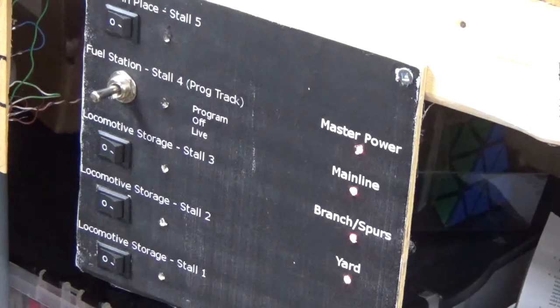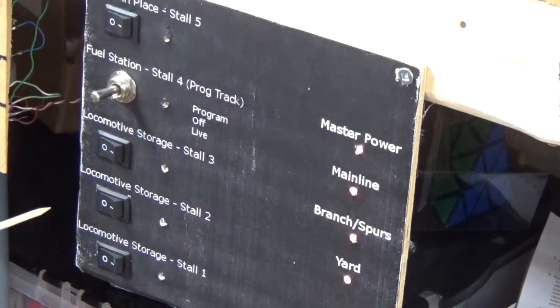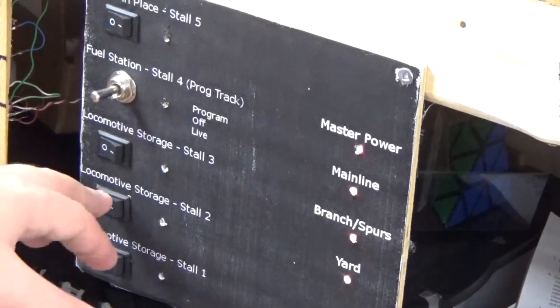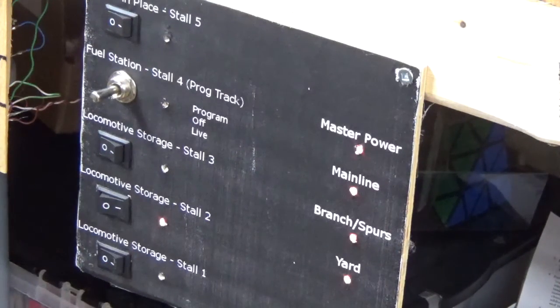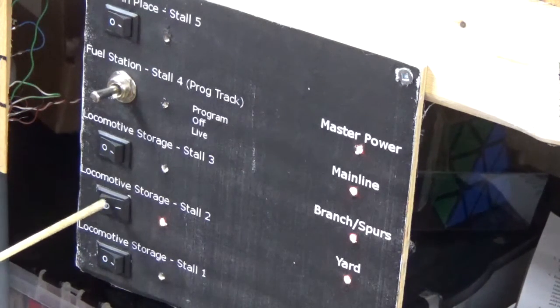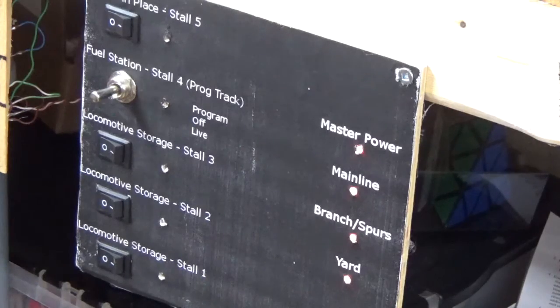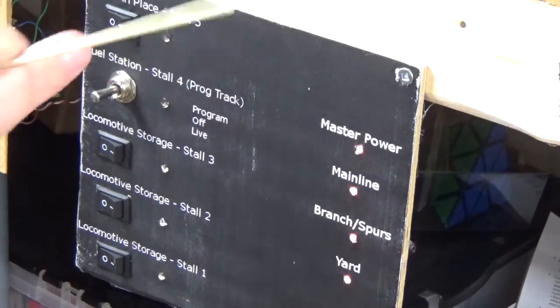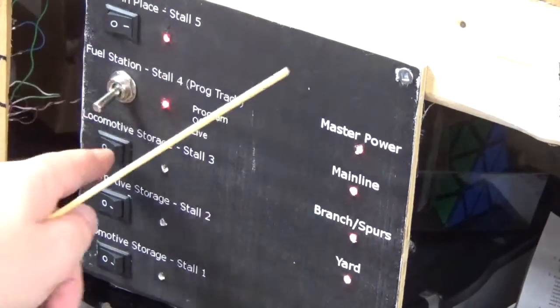Basically, I'm going to show you how I did these switches here so that I can turn on the switch, it applies power to the rails, and there's a little LED light that turns on with the track. That applies for all of them.